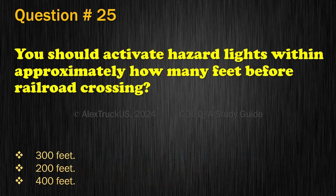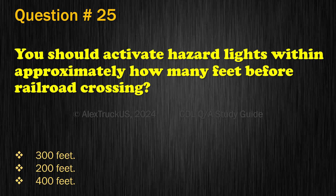Question 25. You should activate hazard lights within approximately how many feet before a railroad crossing? 300 feet, 200 feet, or 400 feet. The correct answer is: 200 feet.